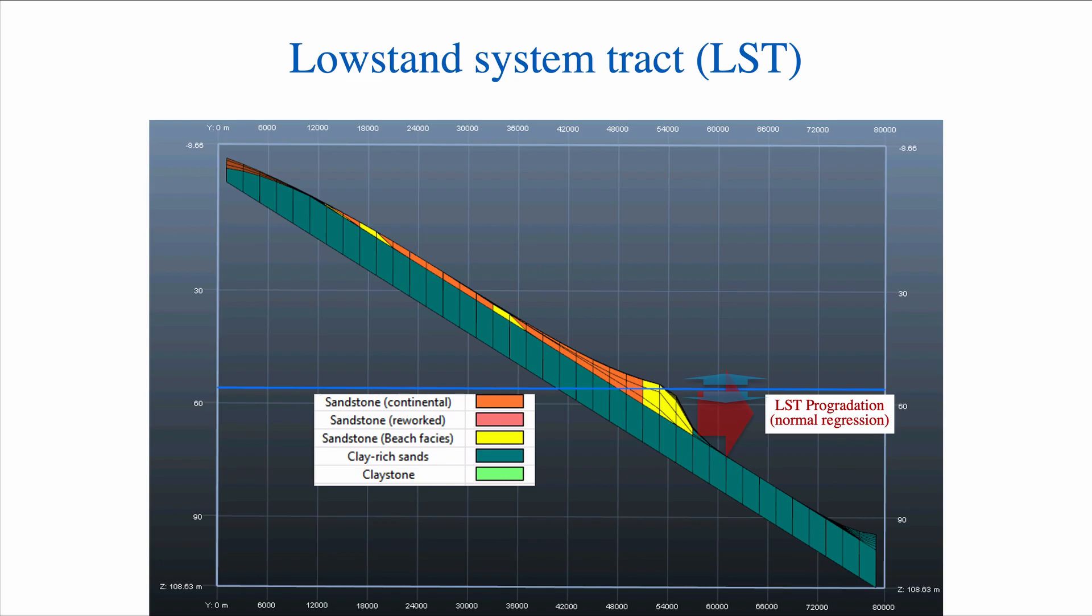The LST is characterized by sea level changing very little and basically being very low. And because sea level is changing very little, you will have accumulation of sand in the lowstand tract. And this accumulation of sand—you can see here those yellow sands—they're pretty thick because they have time to accumulate and because there is very little accommodation.